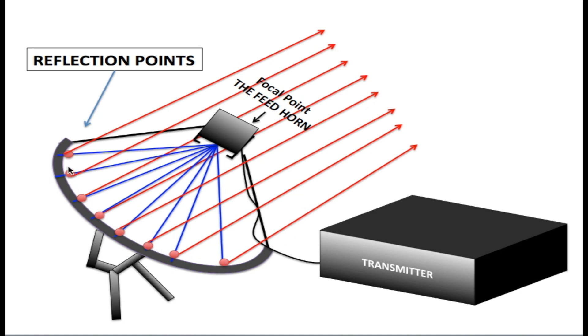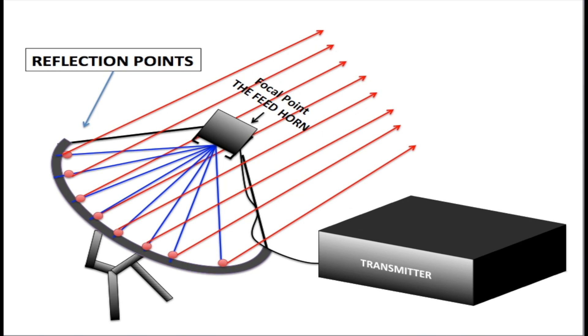There are many reflection points on a satellite dish. For example, a one meter or three foot dish will have about 10,000 reflection points, each contributing to a reflected beam. Next you'll see an animation showing exactly how this process works.